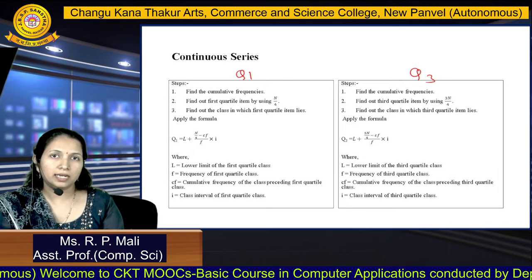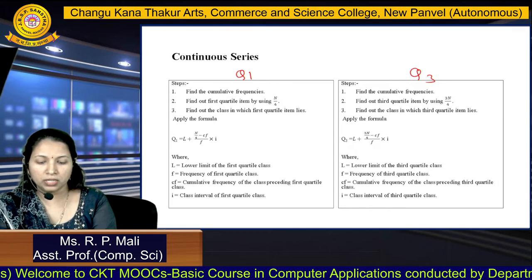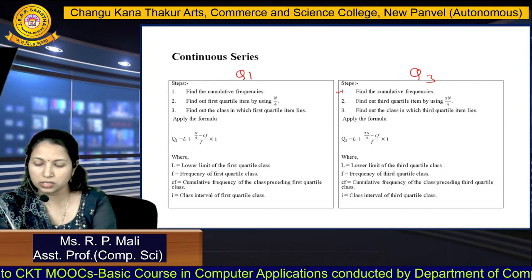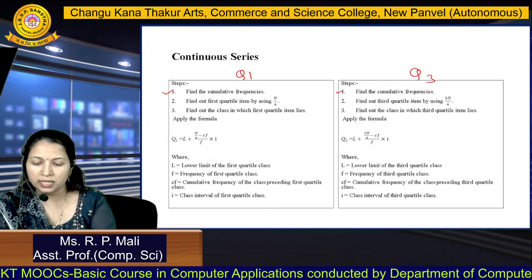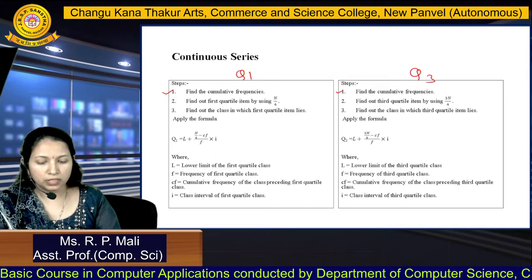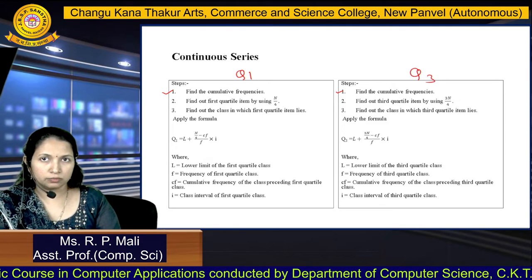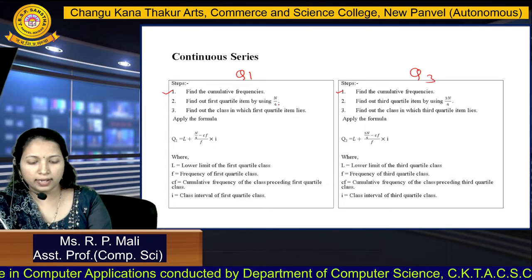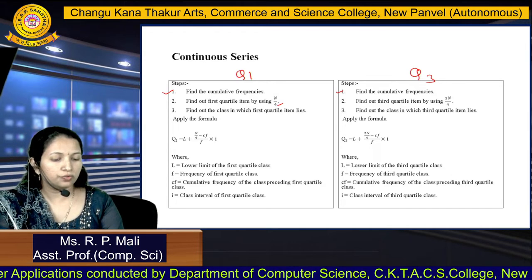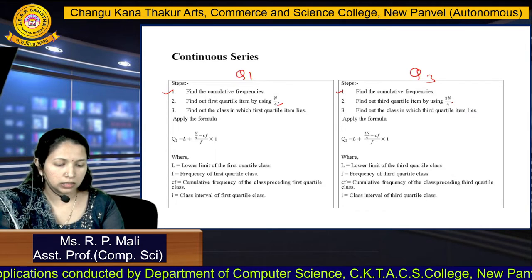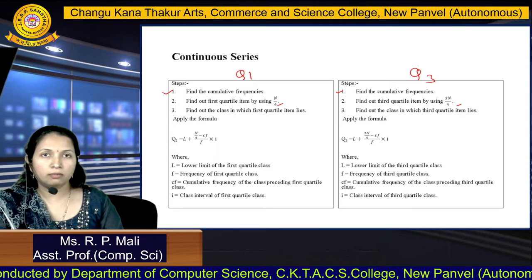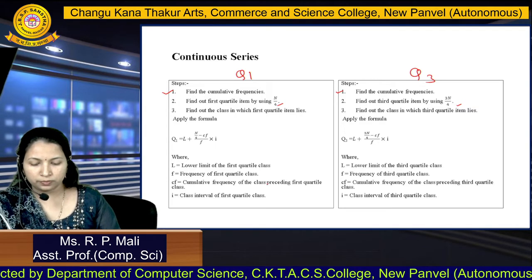In both Q1 and Q3, you are going to find the cumulative frequency. This is your first step. For the next step, we are going to find the first quartile item using n by 4. We are going to find the third quartile item using 3n by 4.